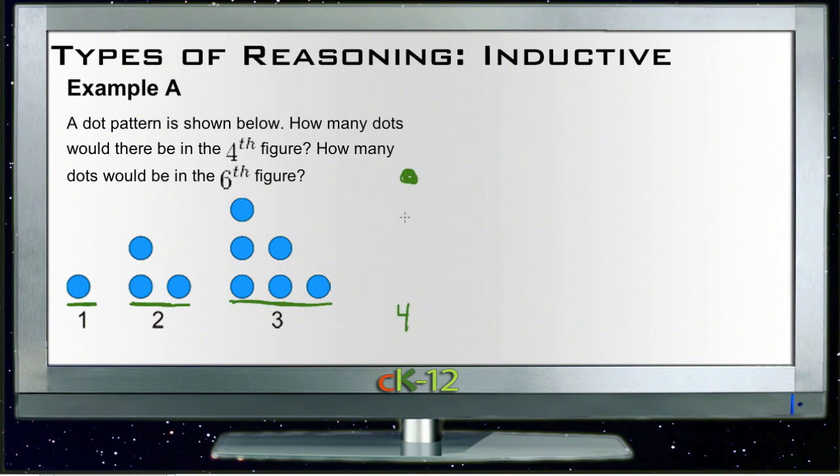It would have one dot on top, then two dots, then three dots, and then four dots. So we can draw out the next two figures, but maybe we can look at a pattern. If we go from 1 to 3 to 6 to 10, the difference here is 2, the difference here is 3, the difference here is 4.